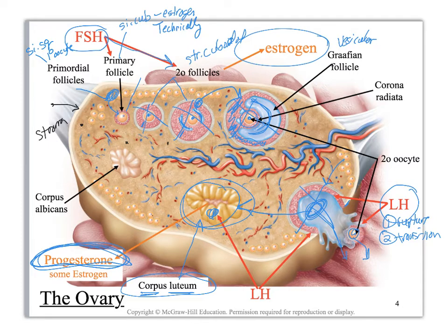Now if fertilization doesn't occur, this follicle is going to start degrading after about a week. It takes another week for the progesterone levels to crash and bottom out. When it does that, this thing basically dies and it transitions to what we call the corpus albicans — the white body. It also stains a slight pink depending on what kind of stain you're using. This is scar tissue.